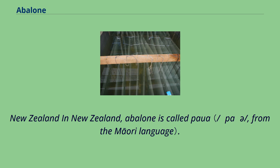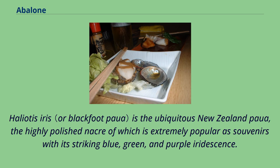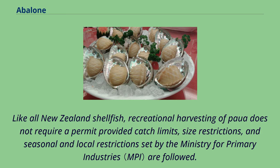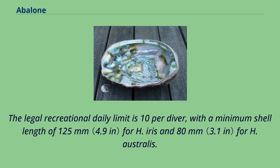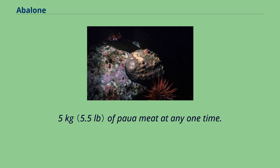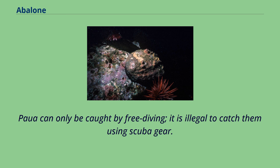In New Zealand, abalone is called Paua. Haliotis iris is the ubiquitous New Zealand Paua, the highly polished nacre of which is extremely popular as souvenirs with its striking blue, green, and purple iridescence. Haliotis australis and Haliotis virginea are also found in New Zealand waters but are less popular than H. iris. Recreational harvesting of Paua does not require a permit provided catch limits, size restrictions, and seasonal and local restrictions set by the Ministry for Primary Industries are followed. The legal recreational daily limit is 10 per diver, with a minimum shell length of 125 mm for H. iris and 80 mm for H. australis. No person may be in possession of more than 20 Paua or more than 2.5 kg of Paua meat at any one time. Paua can only be caught by free diving; it is illegal to catch them using scuba gear.